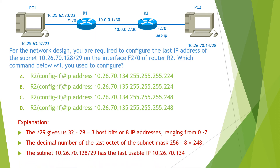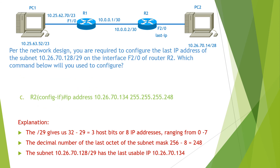The subnet with network address 10.26.70.128/29: when we add 7 to 128 we get the broadcast address, then subtracting 1 gives us the last usable IP address, which is 10.26.70.134. So the answer for this question is C. You can find the detailed explanation in the video Working with IPv4 Addressing.